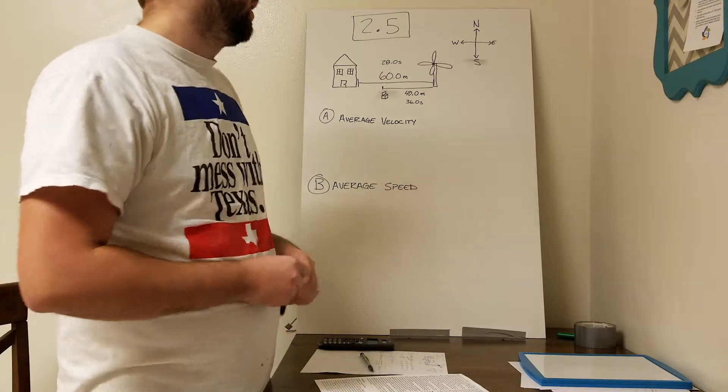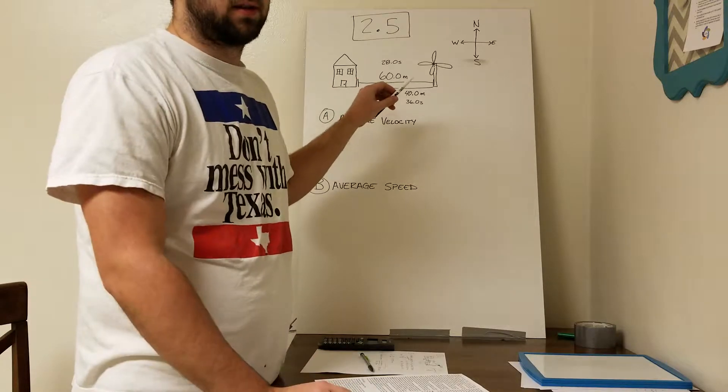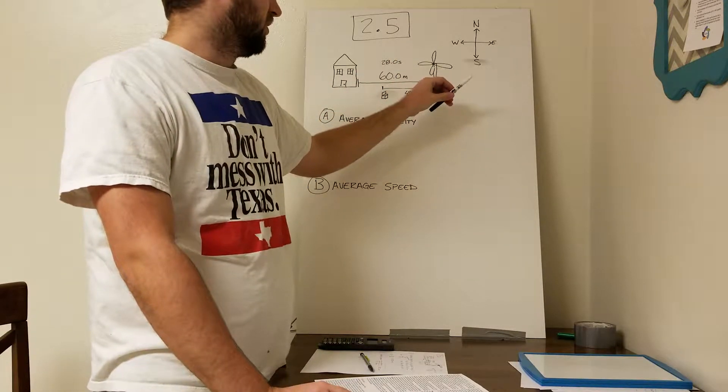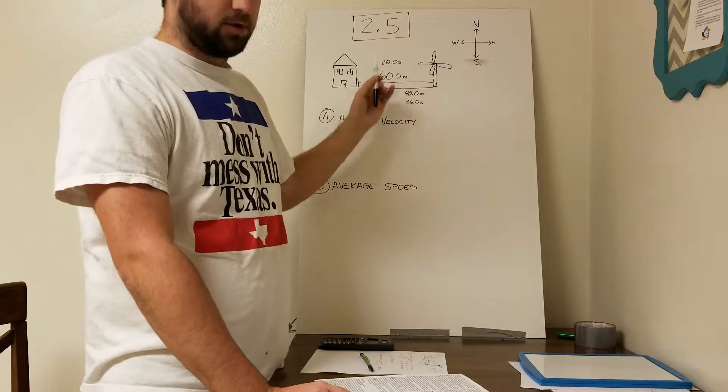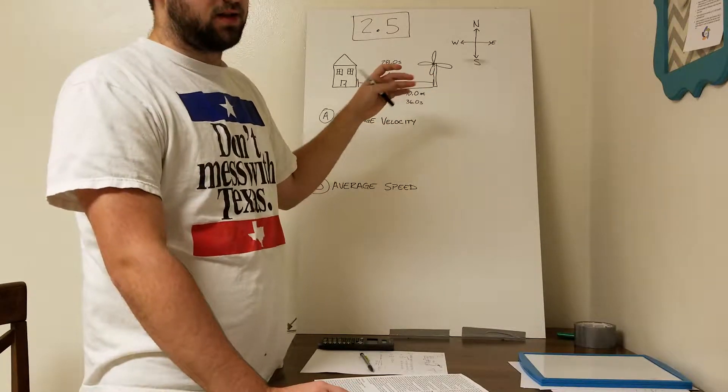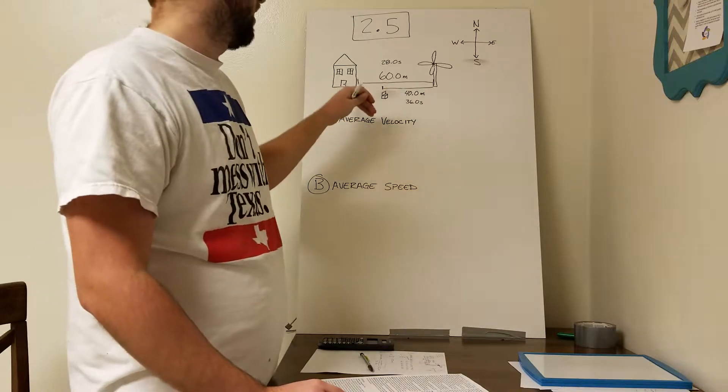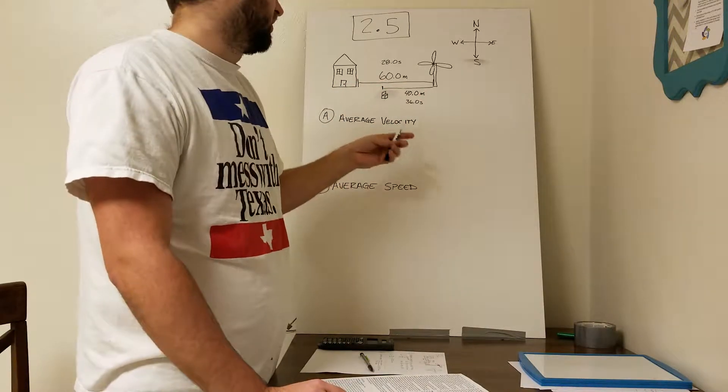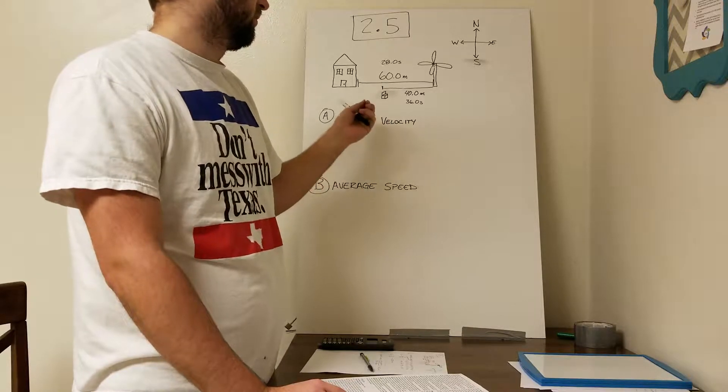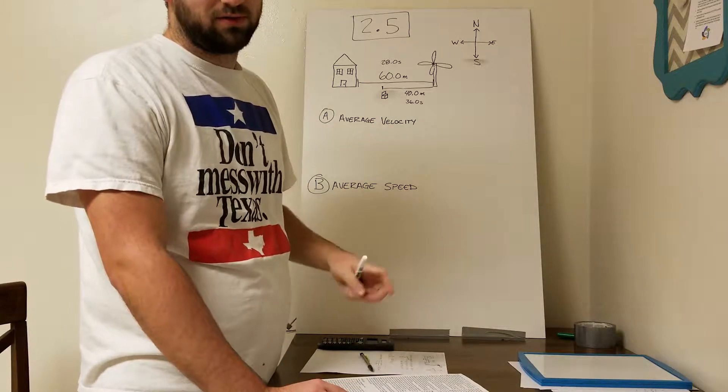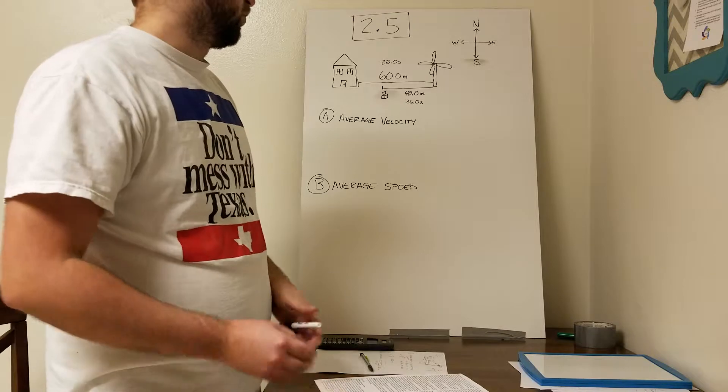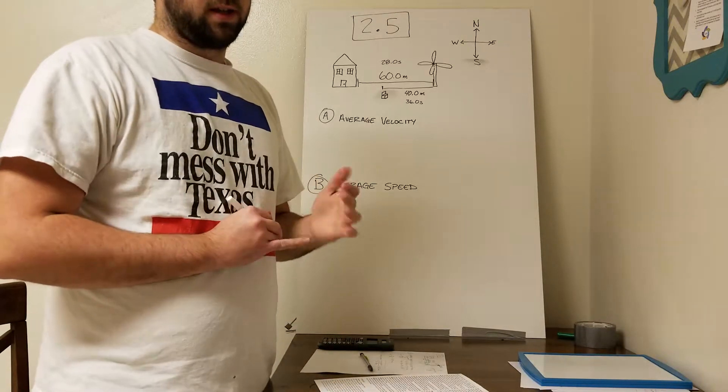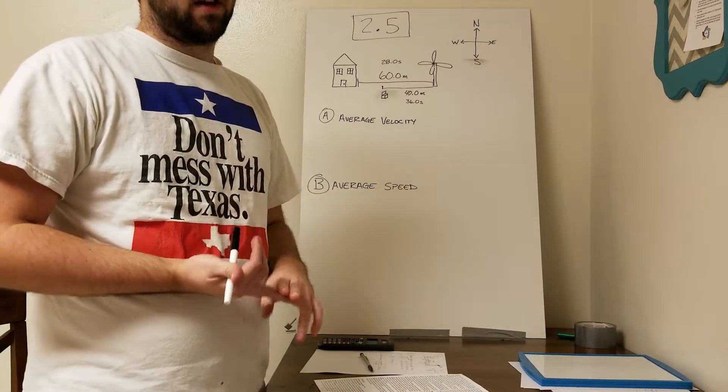Somebody starts at a farmhouse and then they travel 60 meters to a windmill, and that takes 28 seconds to get there. Then from there they turn back around, go back towards the house, and this time they go 40 meters. It takes 36 seconds and they end up at a bench at that point. The question is asking us to find the average velocity and the average speed of this whole trip.